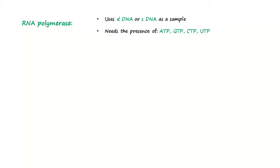The synthesis occurs in the direction 5' to 3' end. Notice the difference: RNA polymerase doesn't need a primer, while DNA polymerase does.